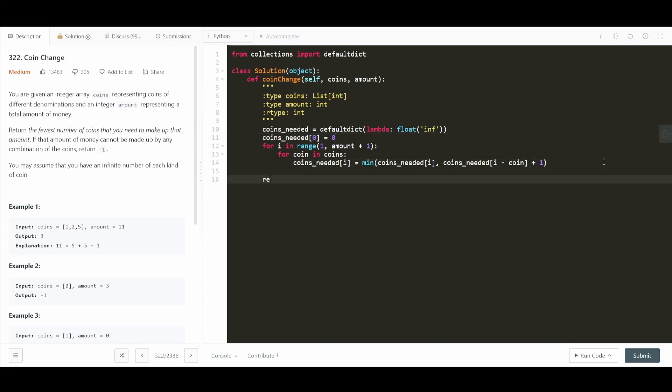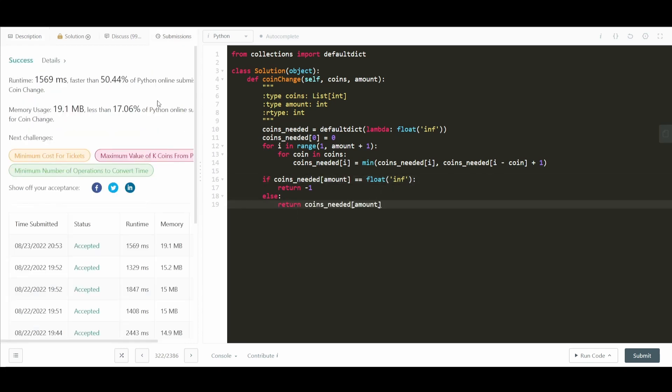And so now we can return coins_needed at amount. The problem with this is we aren't accounting for negative 1. We have to return negative 1 when we cannot reach amount with the coins that we have. If there's no way to reach amount, the value there is going to be infinity, actually. So what we can do is we can say if coins_needed at amount is equal to infinity, we'll just return negative 1. Else we'll return coins_needed at amount. And boom, that's it.